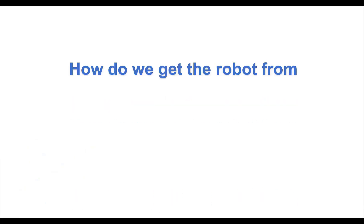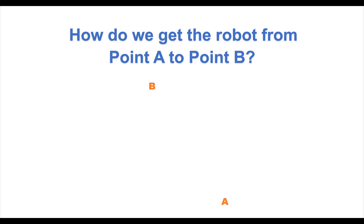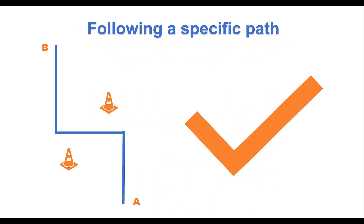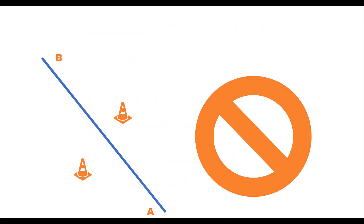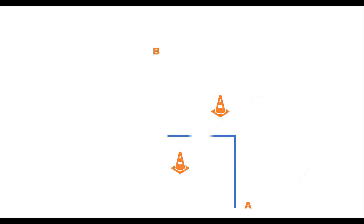The question is, how do we get the robot from point A to point B? The robot has to follow a certain path to get to point B — it can't just go in a straight line. No cheating! The robot must pass through two orange pylons before arriving at point B.